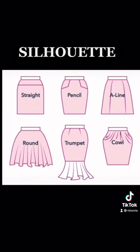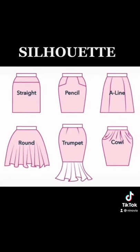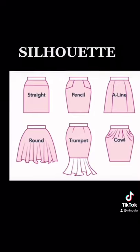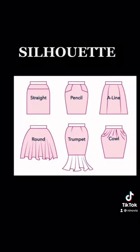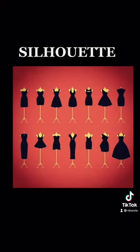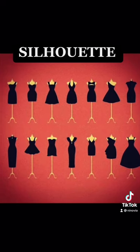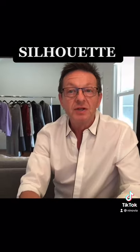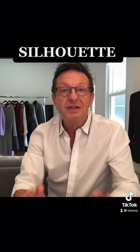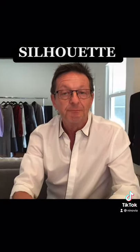If you were standing in the sun and wearing a certain flared skirt, what would that shape or that shadow look like on the ground? By definition, a silhouette is the image of a person matching the outline of the subject.